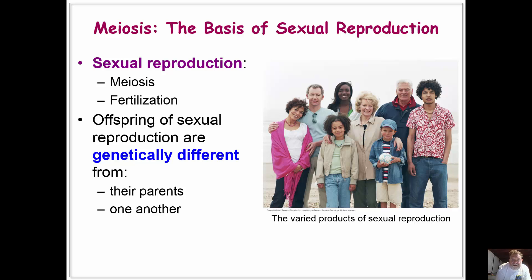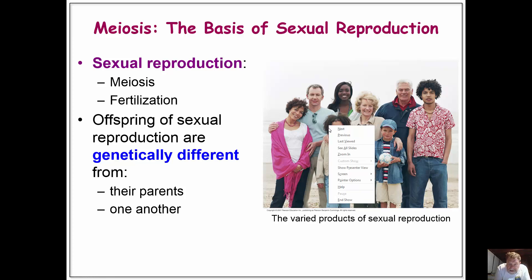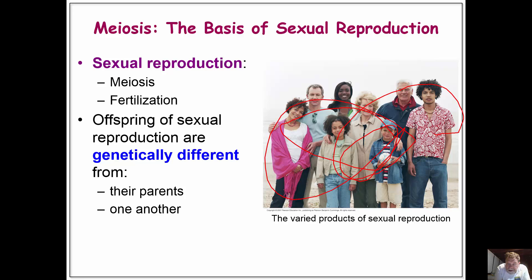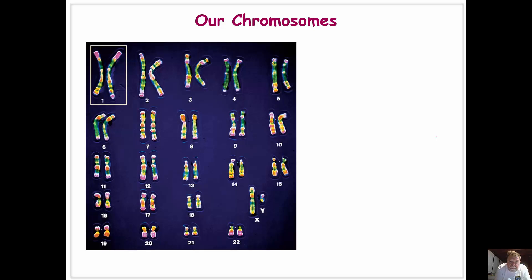This is the basis for sexual reproduction. In sexual reproduction we have two situations: a reductive cell division called meiosis, and then a process by which we increase the number of chromosomes called fertilization. Offspring of sexual reproduction are different from their parents and different from one another. These different individuals who are family are all vastly different from one another, which is a good thing.